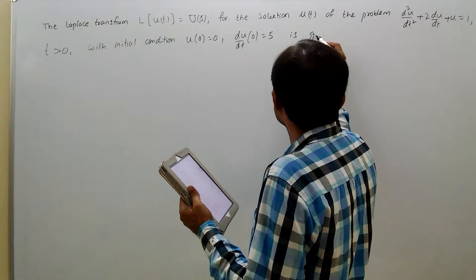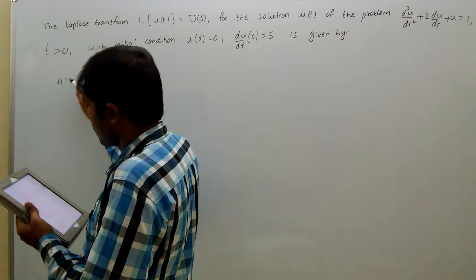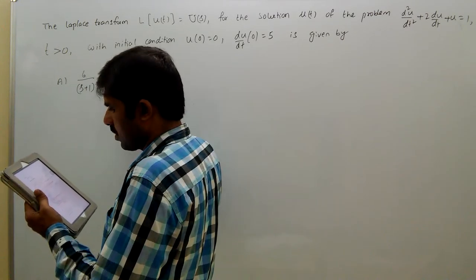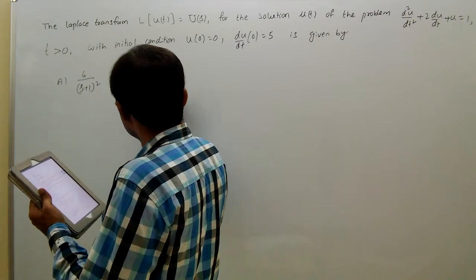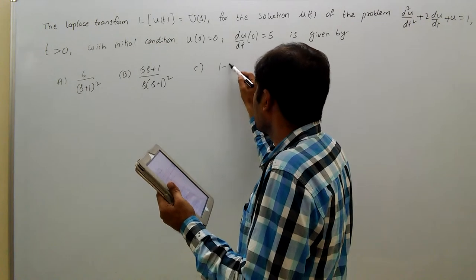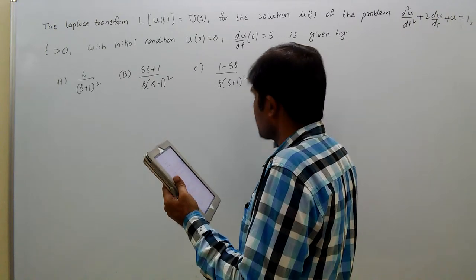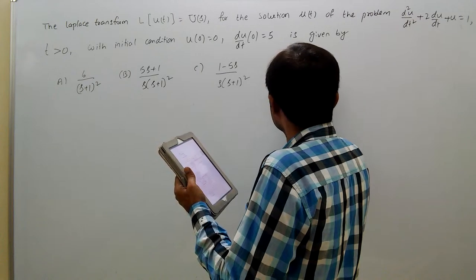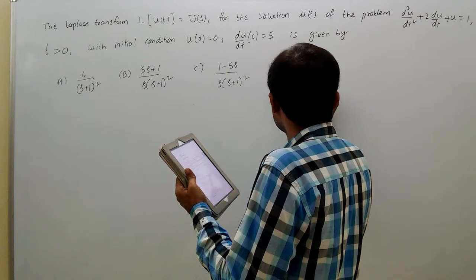The solution is given by: option a: 6 by (s+1) whole squared; option b: (5s+1) divided by s(s+1) whole squared; option c: (1 minus 5s) by s(s+1) whole squared; option d: (5s squared plus 1) divided by s(s+1) whole squared.